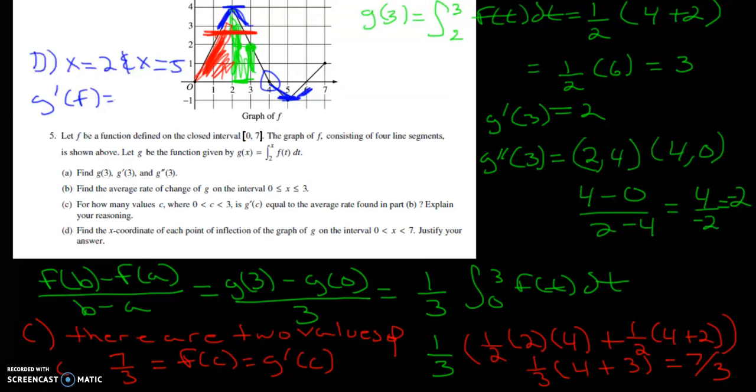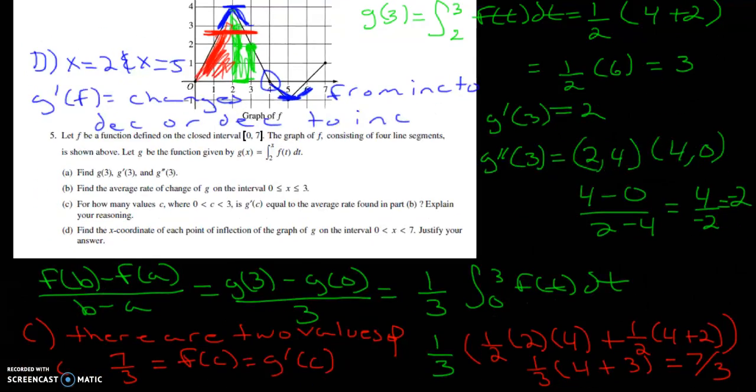But that's only for the derivative. So you would say changes from increasing to decreasing or decreasing to increasing at these two particular points. And you should probably specify that the first one is 2 and the second one is 5. I'm kind of out of room, but you could do that. I hope this video helps.